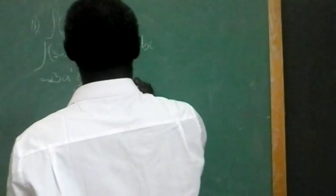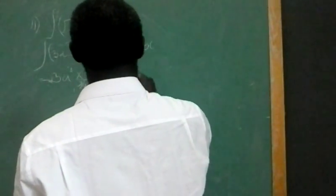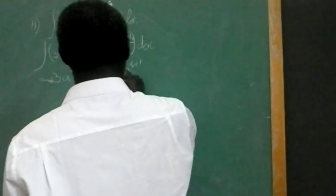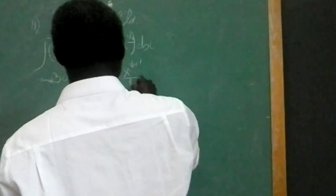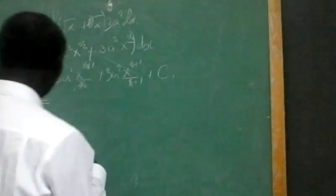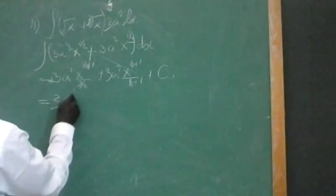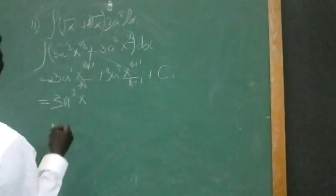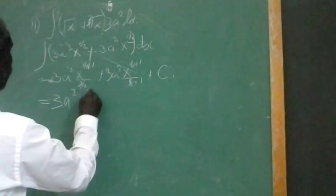plus 3a squared x to the 3/2, plus 3a squared x to the 3/2. This is how we go to, 3a squared x to the 3/2.